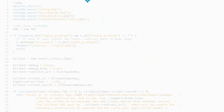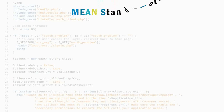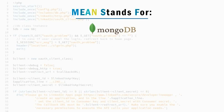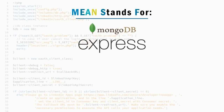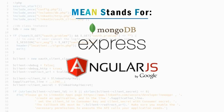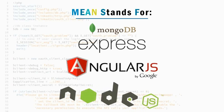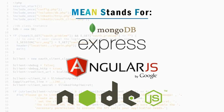Let's first discuss what MEAN stands for. M stands for MongoDB, E stands for Express.js, A stands for Angular.js, and N stands for Node.js. So MEAN is an acronym representing these four distinct technologies.